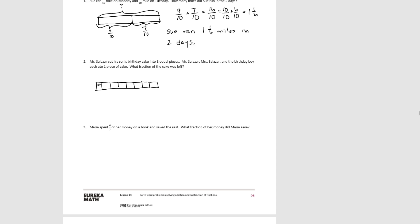Mr. Salazar ate a piece, Mrs. Salazar ate a piece, and the birthday boy ate a piece. We know this is one whole cake. Looking at what was eaten — the cake was divided into eight equal-sized pieces and three of them were eaten — we want to know what's left. Since we have a total and one part and need to find the second part, we know we need to subtract: one whole cake minus three-eighths eaten.